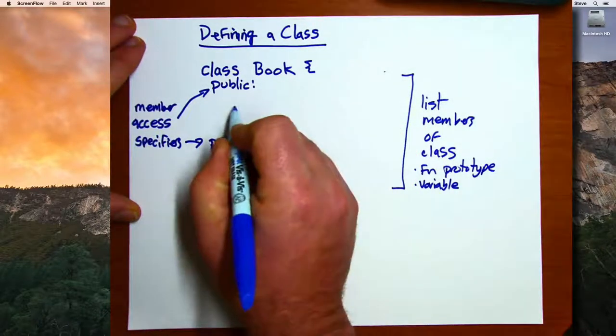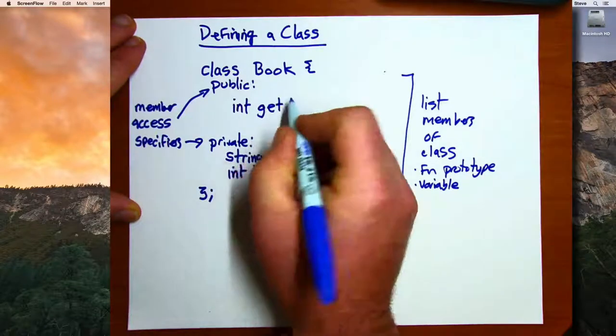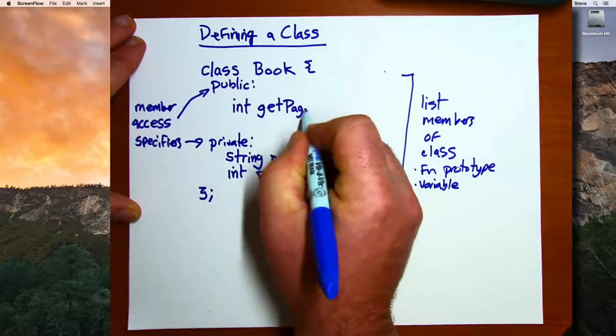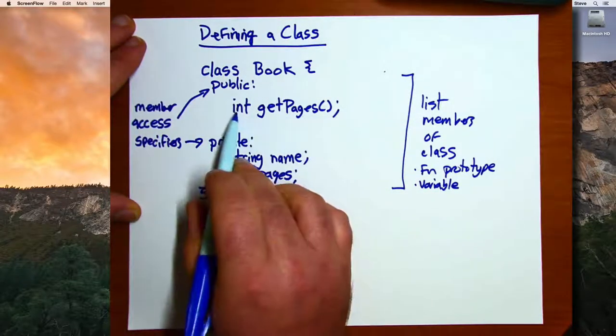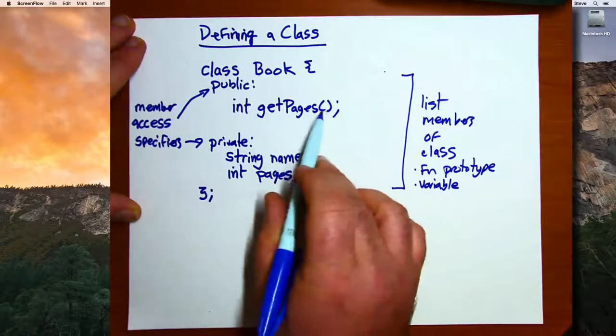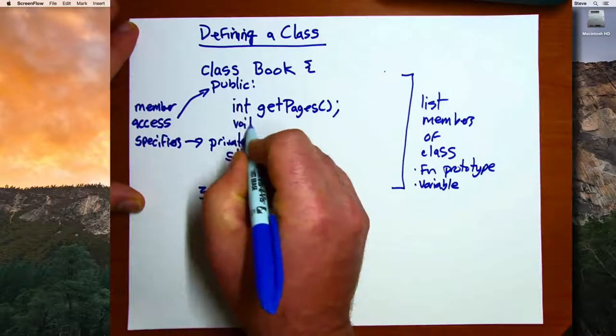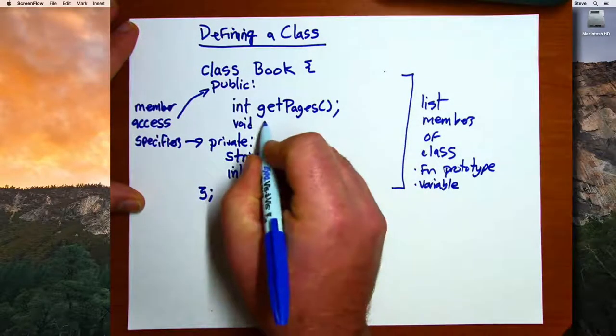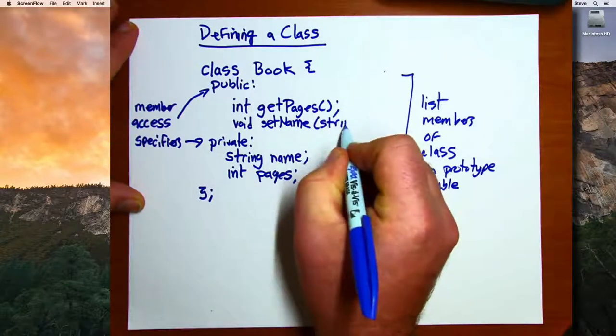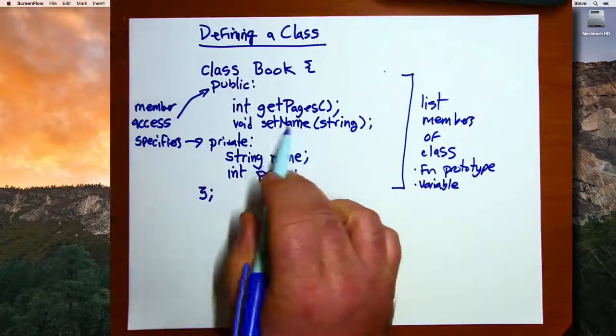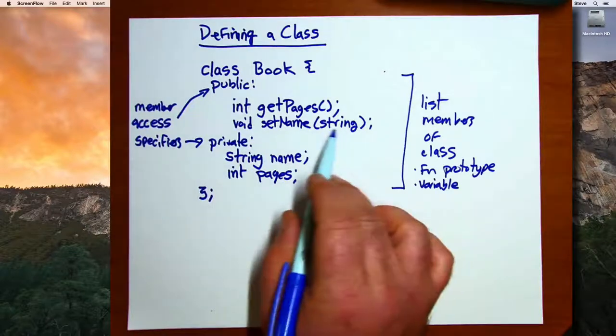Okay, and so here we can list prototypes. So here looks like a prototype for a function. It's got a return type, a name of the function, parentheses, this function doesn't have any parameters. We can list another function in here, void setName string. So here's a member function called setName that has a void return type, and that has one parameter, a string.